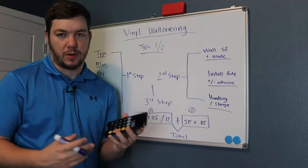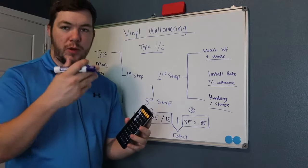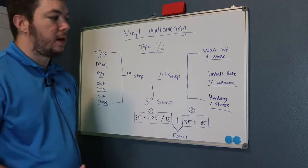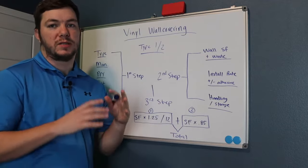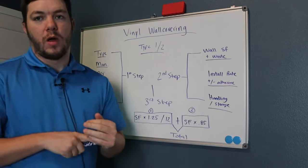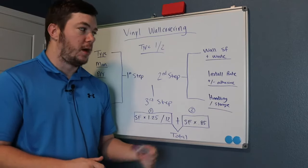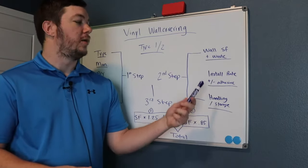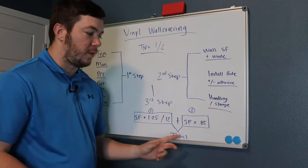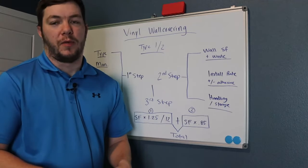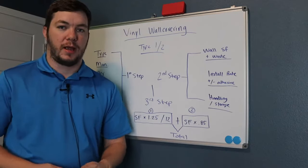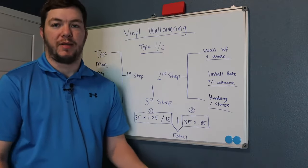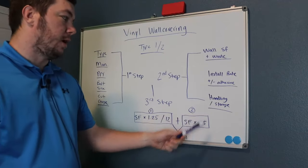When you hang wall covering, you're going to have waste because you're going to have to cut — a lot of times you want the patterns to match, so you cut very specifically. Sometimes they don't have to match, it's just a random hang. But either way, with corners, windows, and doors, you're going to have waste. So we always added 25% to cover that. You're also going to need to know your install rate plus your adhesive — this is for people who want to sub out the work to a crew. A local vinyl wall covering crew will tell you their price per square foot or per square yard, and usually that'll include your adhesive.